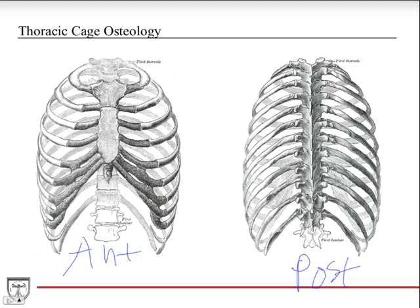One thing to note about the thoracic vertebrae is that this diagram does a good job of illustrating that the thoracic vertebrae don't really move too much. They don't have a tendency to have degenerative osteoarthritis or degenerative disease like in the lumbar or cervical spine, which undergoes a lot of motion. The thoracic vertebrae doesn't really undergo much motion, and that's because of these ribs stemming out from them and holding them in place.